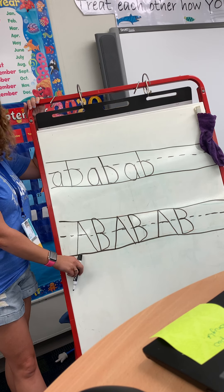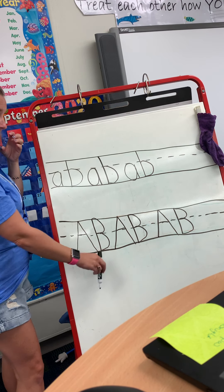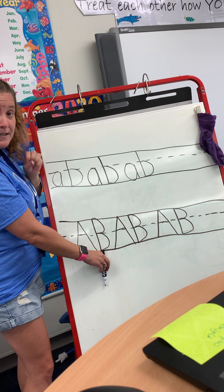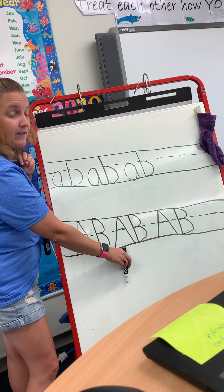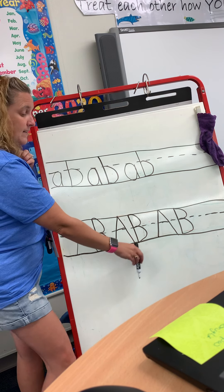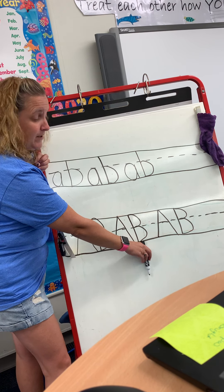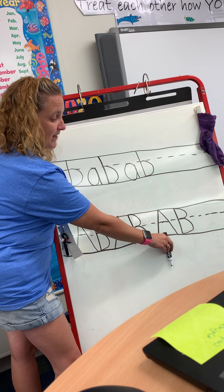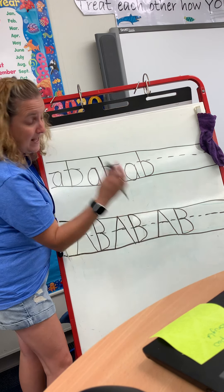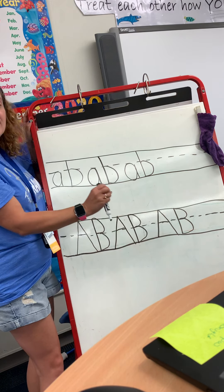The name of the letter is A, the sound of the letter is A. The name of the letter is B, the sound of the letter is B. The name of the letter is A, the sound of the letter is A. The name of the letter is B, the sound of the letter is B. The name of the letter is A, the sound of the letter is A. The name of the letter is B, the sound of the letter is B.